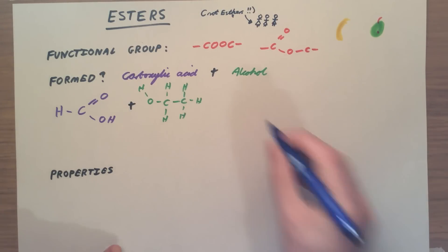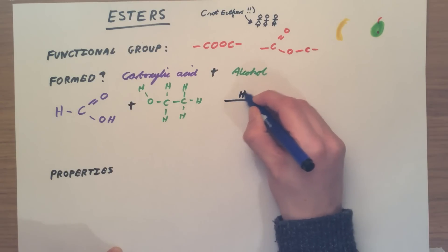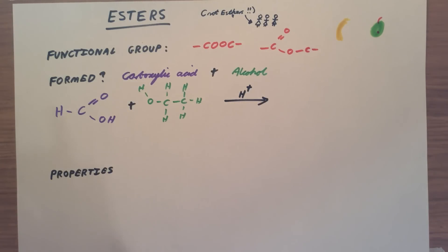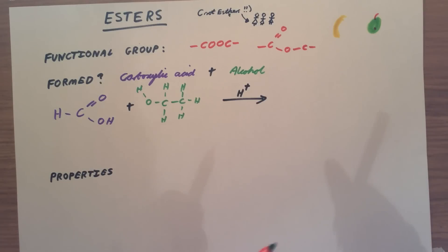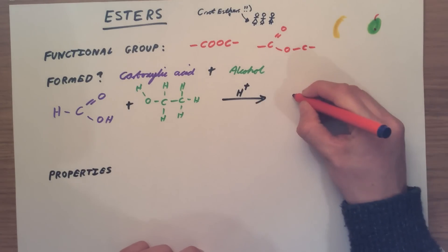To get this reaction going, we normally use an acid catalyst. So I'm just going to put H+ here, all that means is that I've got an acid here. And the product, the ester I formed, is going to be based on both methanoic acid and ethanol.